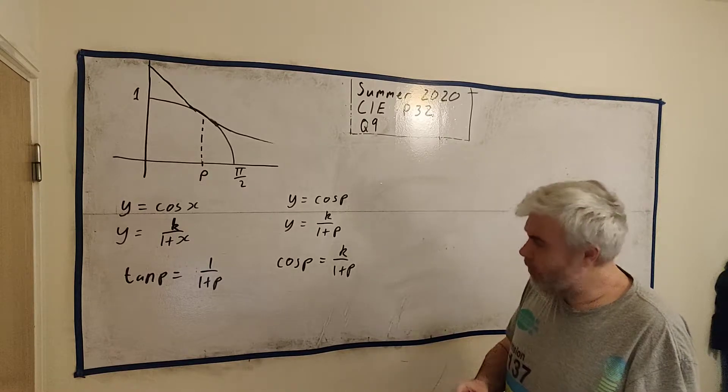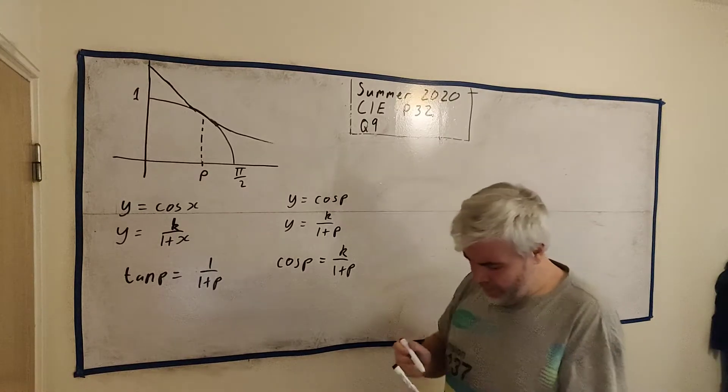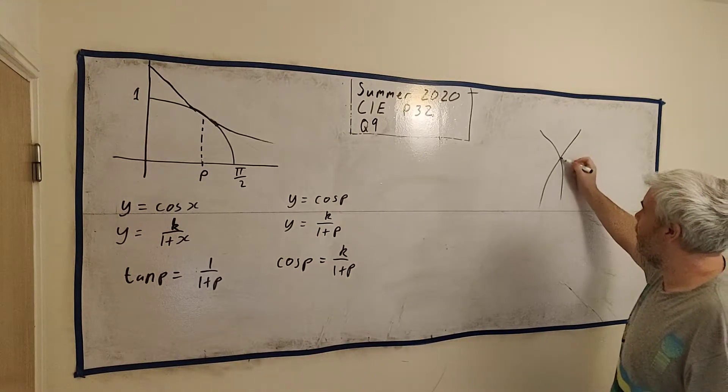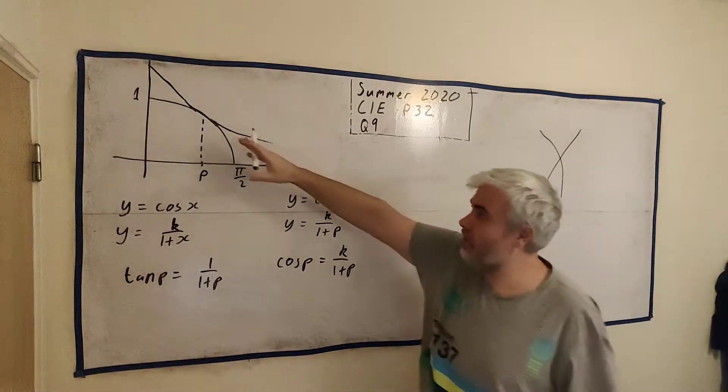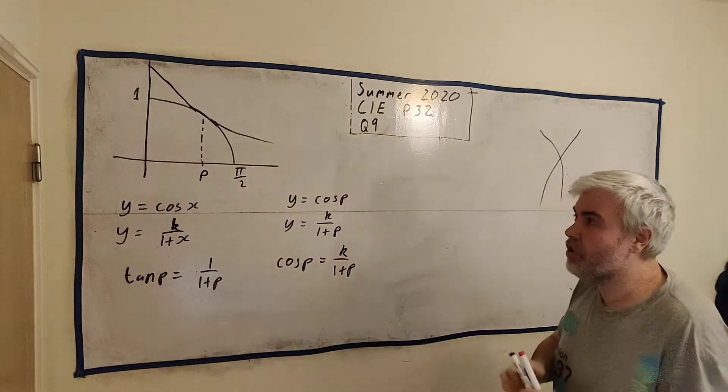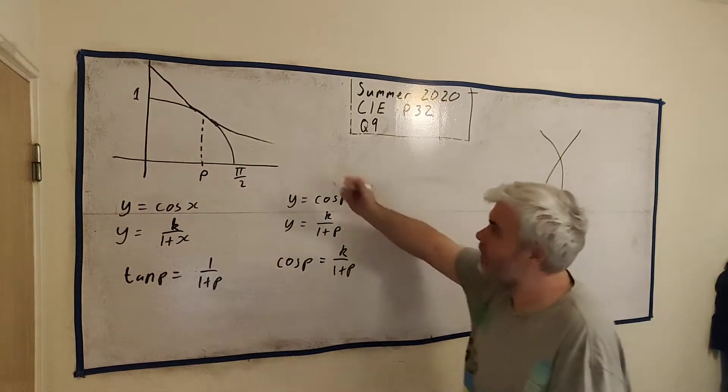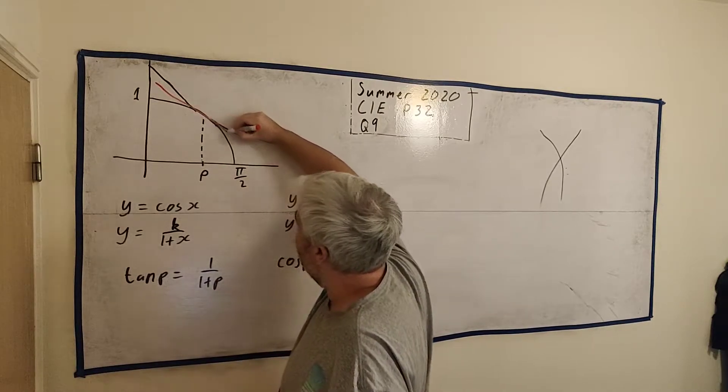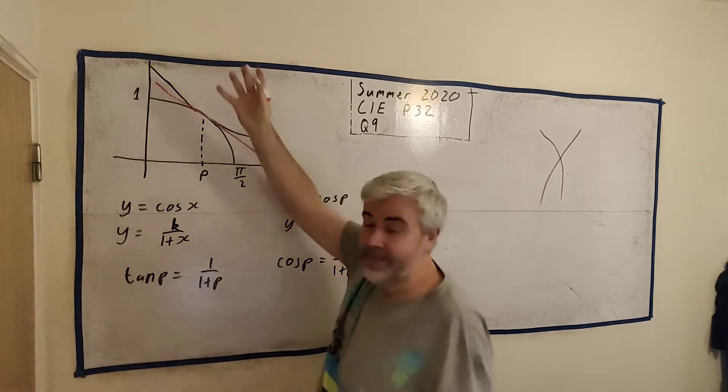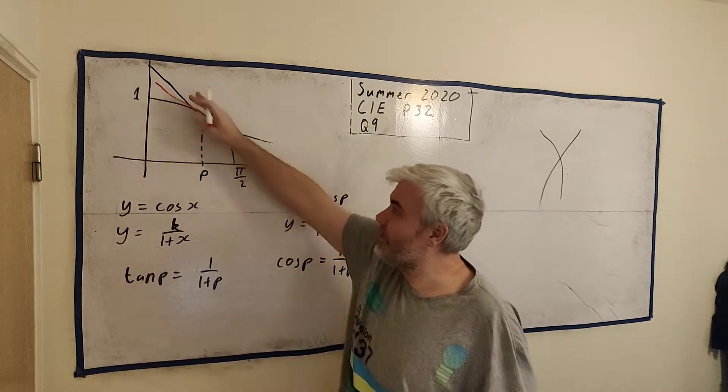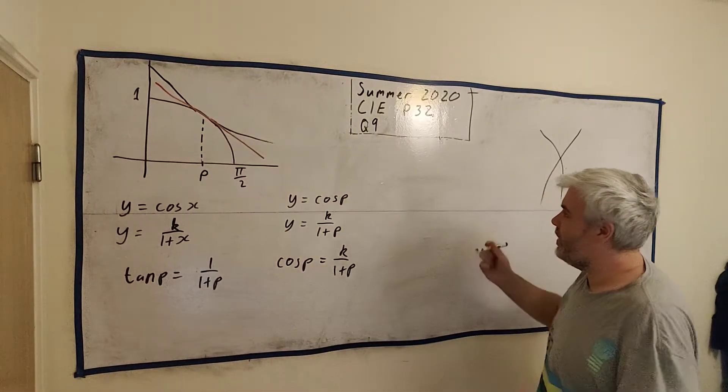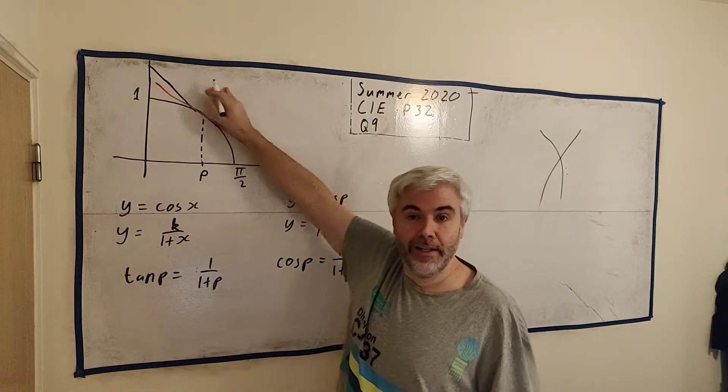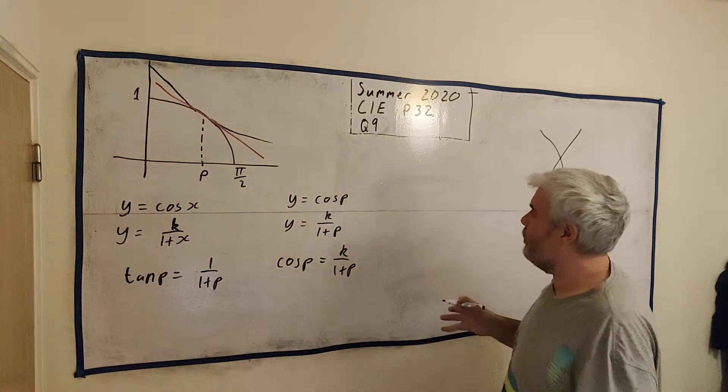What you needed to notice was that these two curves, they're not just intersecting like this. They're actually sharing a tangent. They just touch each other, just barely touch each other. There's a tangent line at the point p that's the same for both of them. The tangent of one of them is the same as the other. That means dy dx for one of them is the same as dy dx for the other at the point p.